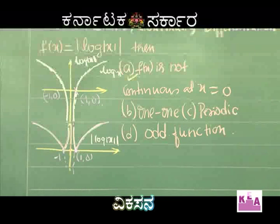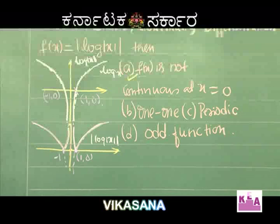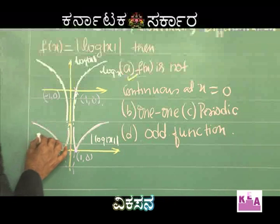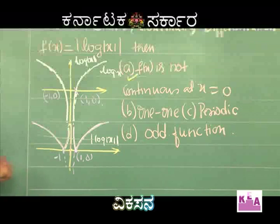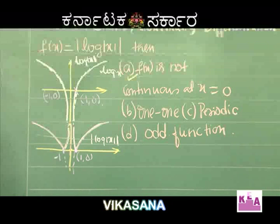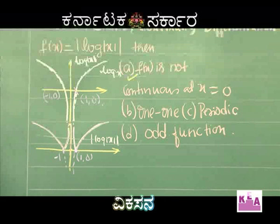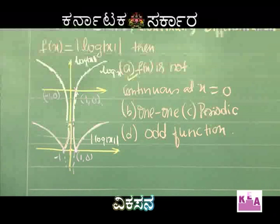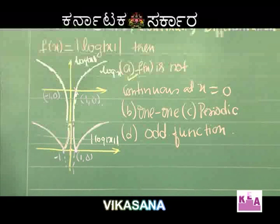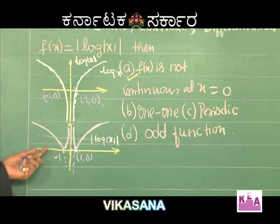Coming to the next option: is it 1-1? No, it is not 1-1. Just draw a line parallel to the x-axis — it meets the graph at more than one point. Therefore the function is not 1-1; it is definitely many-to-one. A speciality of many-to-one functions is that a line drawn parallel to the x-axis meets at least two points.